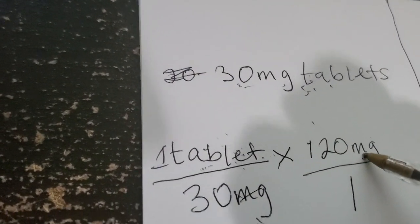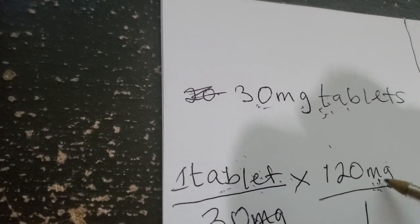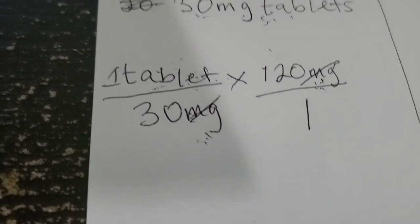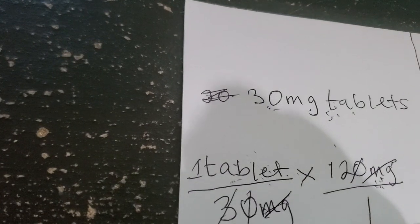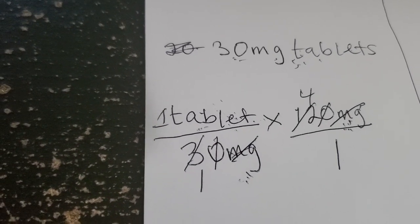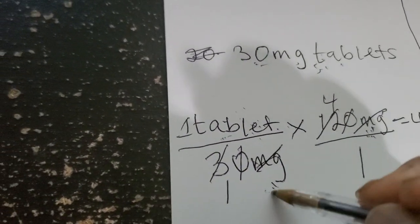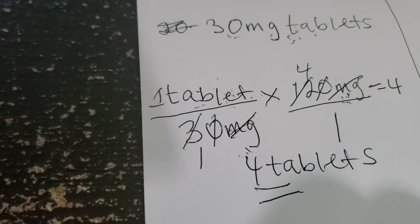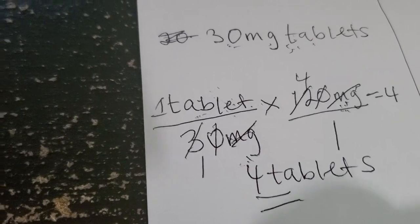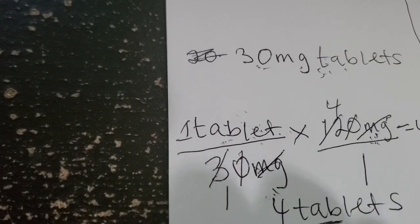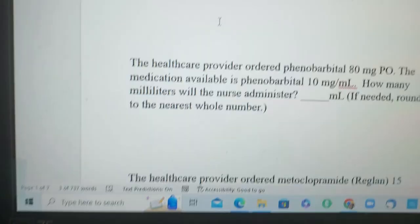Cross out the milligrams since they cancel — I need the answer in tablets, not milligrams. Using the calculator: 120 divided by 30 gives 4. Therefore, 4 tablets is the answer. The final result is in tablets as the question required, and since 4 is already a whole number, there is no rounding needed. Let's move on to the second question.